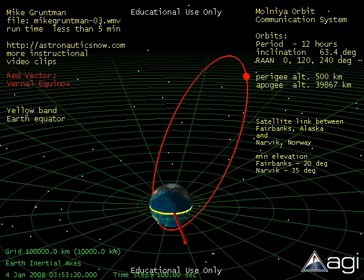There are two orbit inclinations, 63.4 degrees and 116.6 degrees, when rotation of apsides equals zero. In our example, orbit inclination is 63.4 degrees and the line of apsides does not rotate.